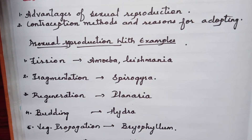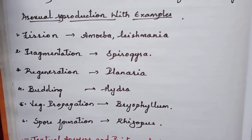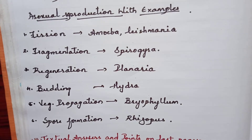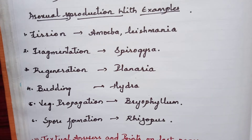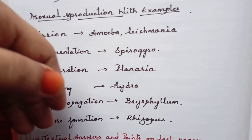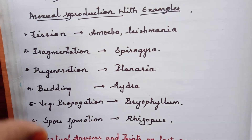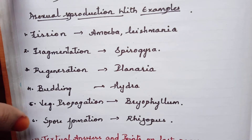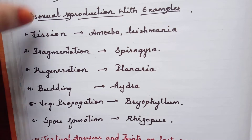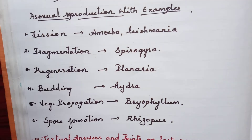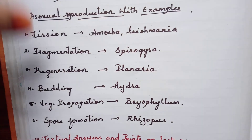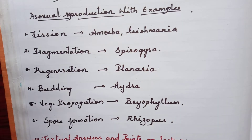Next, asexual reproduction — I've mentioned a few examples here. Even without match-the-following questions, they might put these in objectives or name-the-following type questions. For asexual reproduction we have six methods: fission — examples amoeba, leishmania; fragmentation — spirogyra; regeneration — planaria; budding — hydra; vegetative propagation — bryophyllum; and spore formation — rhizopus.